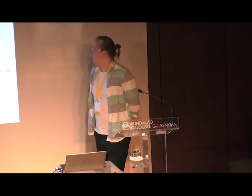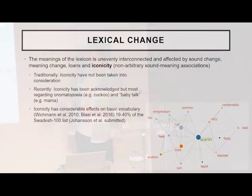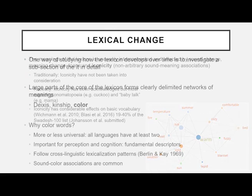When we talk about lexical change or lexical development, meanings of the lexicon are quite unevenly distributed or connected, and they are affected by a range of things: sound change, meaning change, loans, but also iconicity — meaning in this case the association between sound and meaning. Traditionally iconicity has not really been taken into consideration, though recently it has appeared in forms of onomatopoeia or baby talk. Several studies suggest iconicity affects a large part of basic vocabulary throughout languages and should really be taken into consideration.